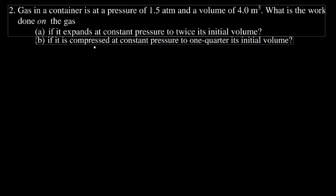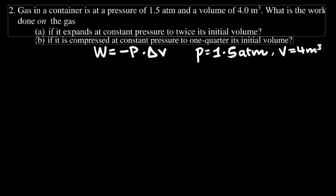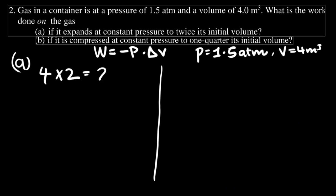We know that the work done is equal to negative P multiplied by the difference in volume. In the question we are given the pressure as 1.5 atm and the volume as 4 m³. For part A, the gas expands at constant pressure to twice its initial volume, so V initial is 4 and V final is 8.